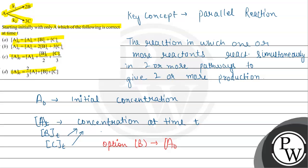Which says A₀ equals Aₜ plus 2Bₜ plus 3Cₜ. Options A, C, and D are incorrect. This was the solution. Hope you understood it well. Best of luck.